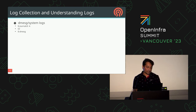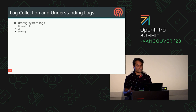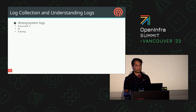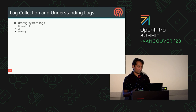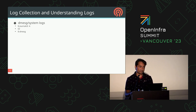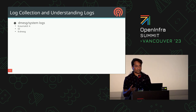Just as safe logs are important, dmesg and kernel logs are equally important. Sometimes everything looks good from the safe logs perspective, but you don't know what really happened on the system when things went wrong for the safe node. That particular node's dmesg or kernel logs can give more details, like whether there was a task hung issue or other kernel-level issues.